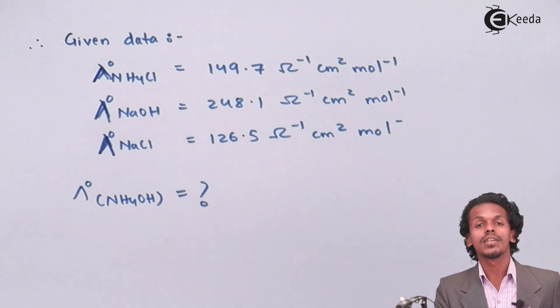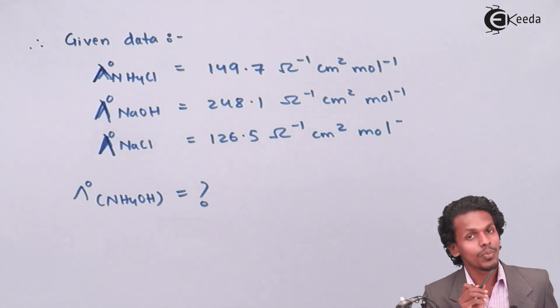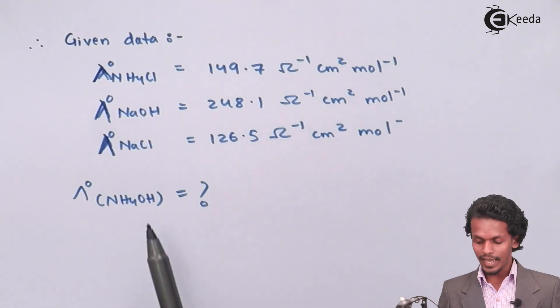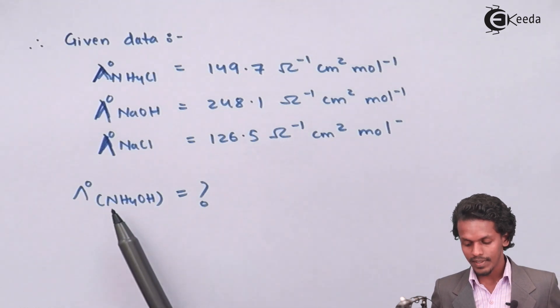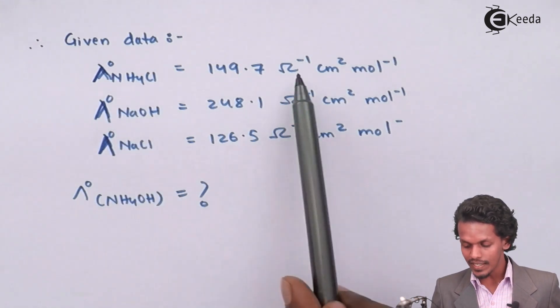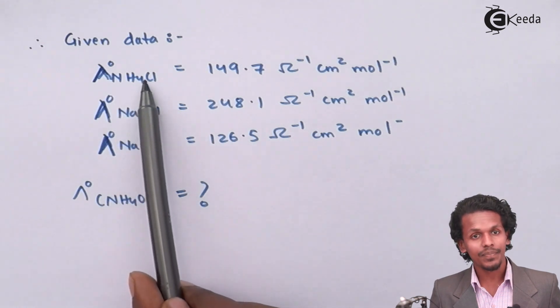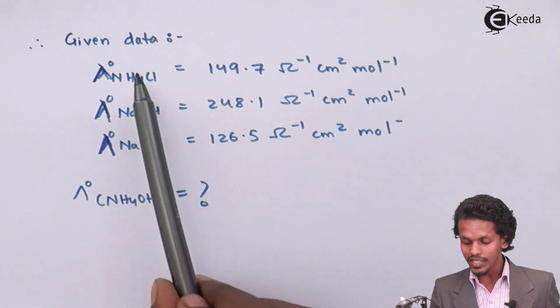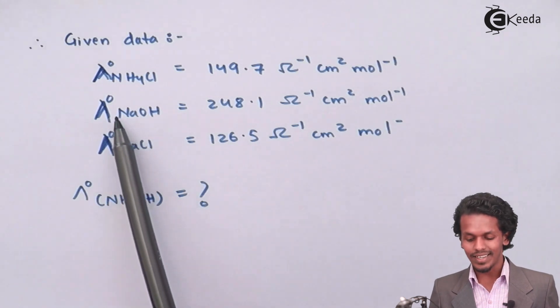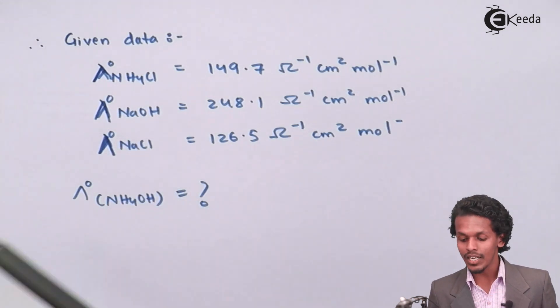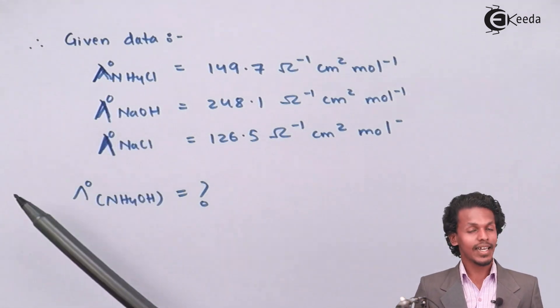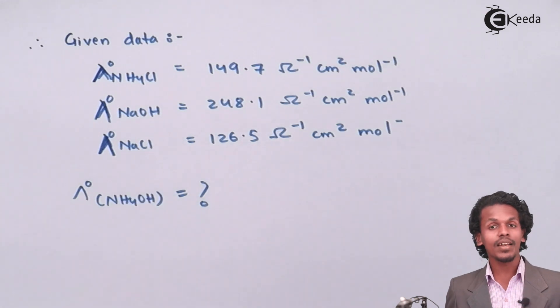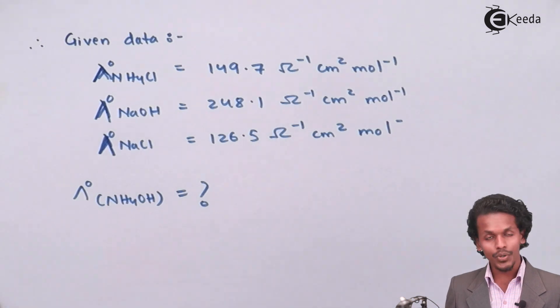First of all we have to know which electrolyte should be added and which should be subtracted to get NH4OH. If I see, NH4 is present in the electrolyte NH4Cl, while OH is present in the electrolyte NaOH. This means that we have to add these two electrolytes and subtract NaCl. So let us see whether we are moving in the right direction or not.